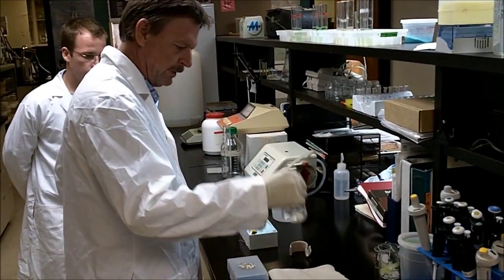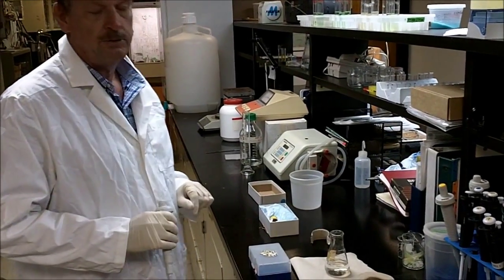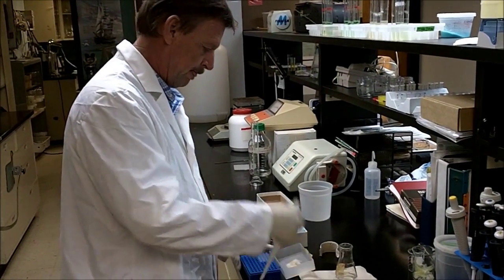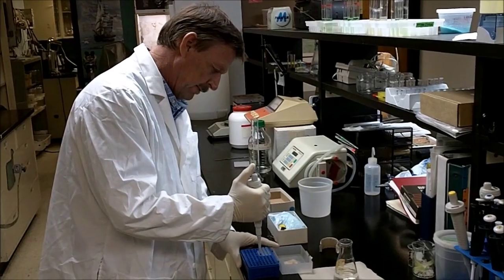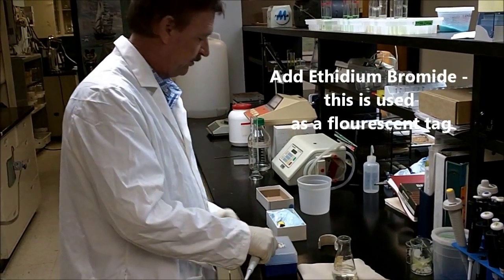After melting the agarose in the microwave, we add ethidium bromide to the gel to be able to visualize the DNA. In a 60 ml gel is about 3 microliters. So it's 3 microliters per 60 ml.